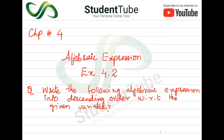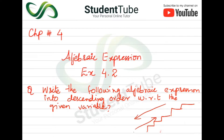Now we have to write it in descending order. So what is descending? I will give you the example of stairs. Ascending means going from small to large (going up). Descending is the opposite — going from large to small. So let's solve the question.